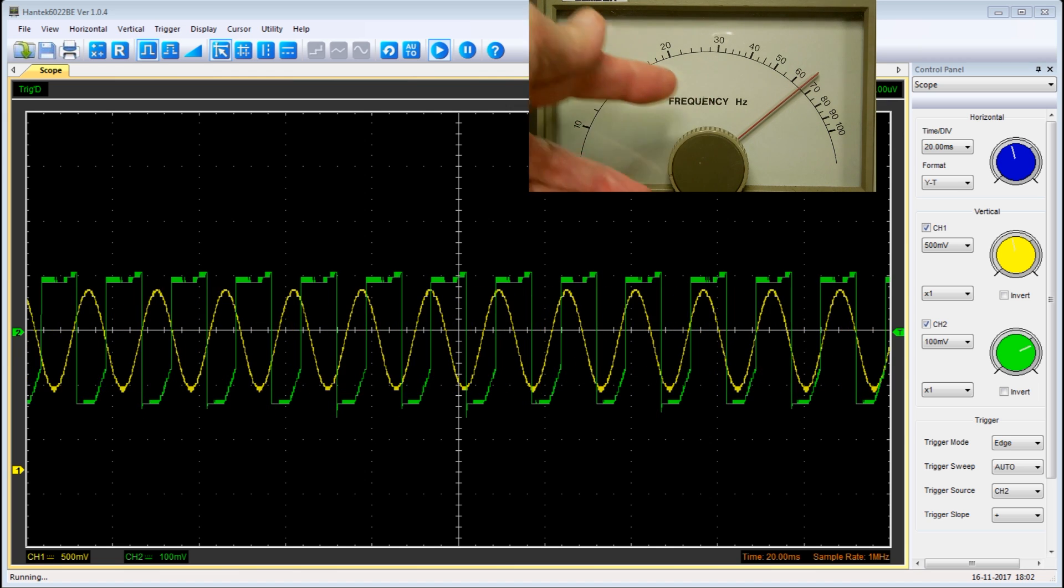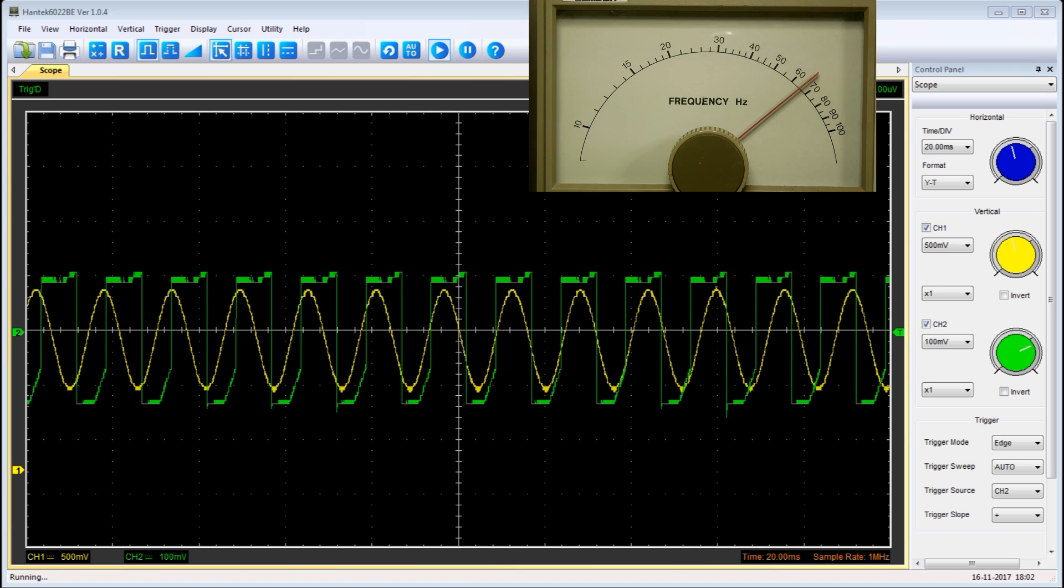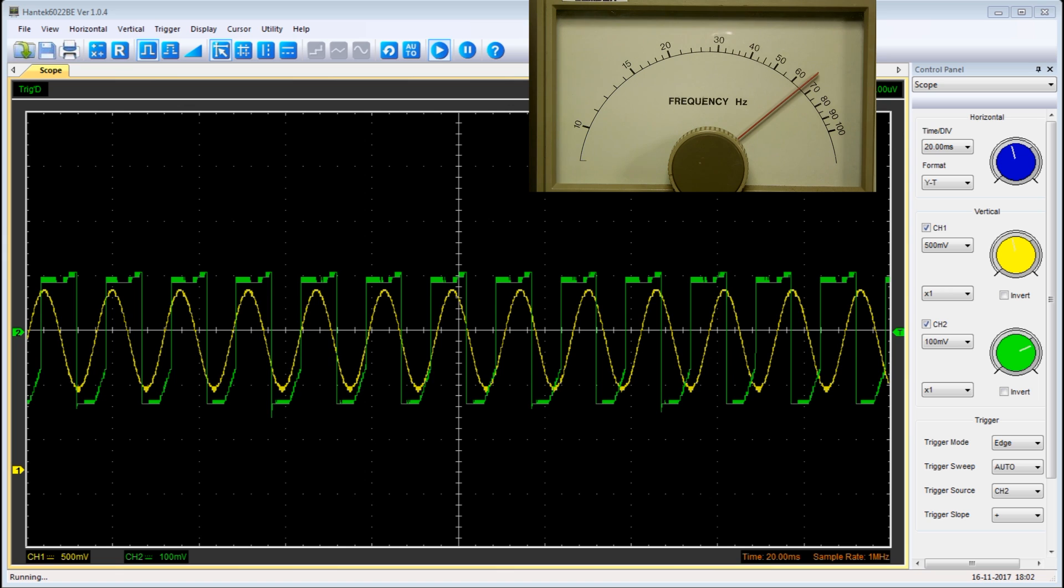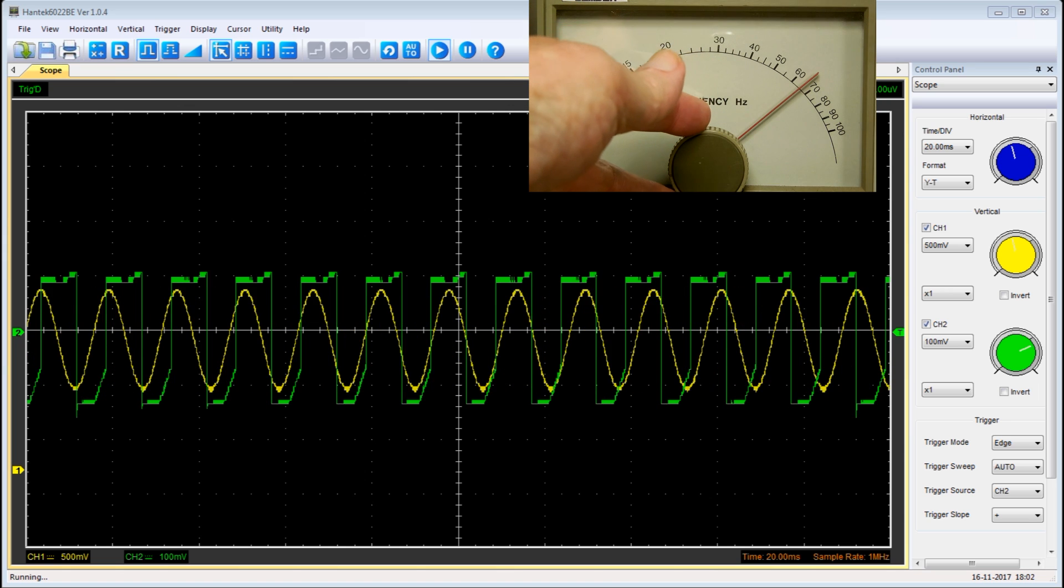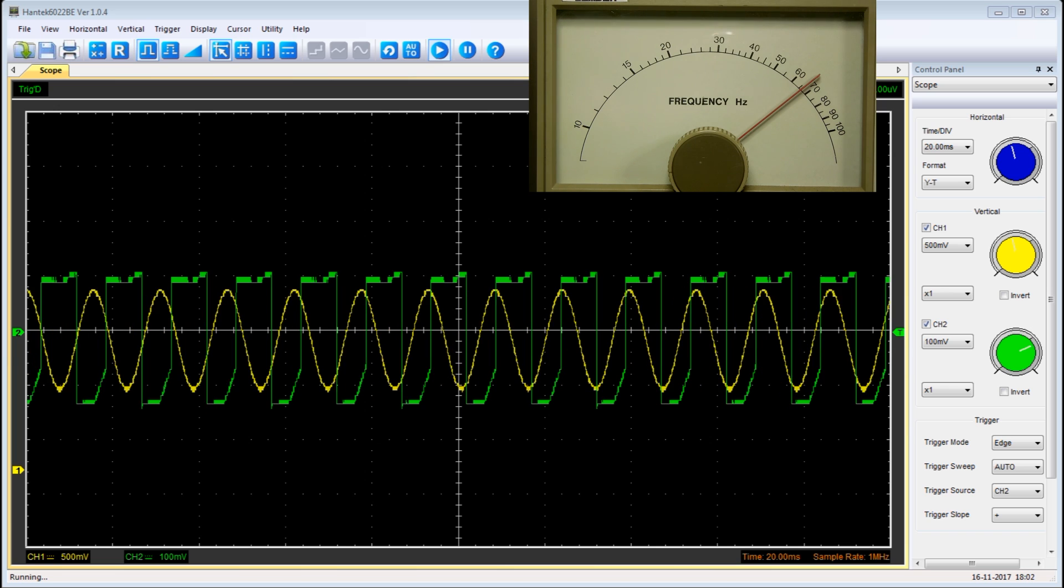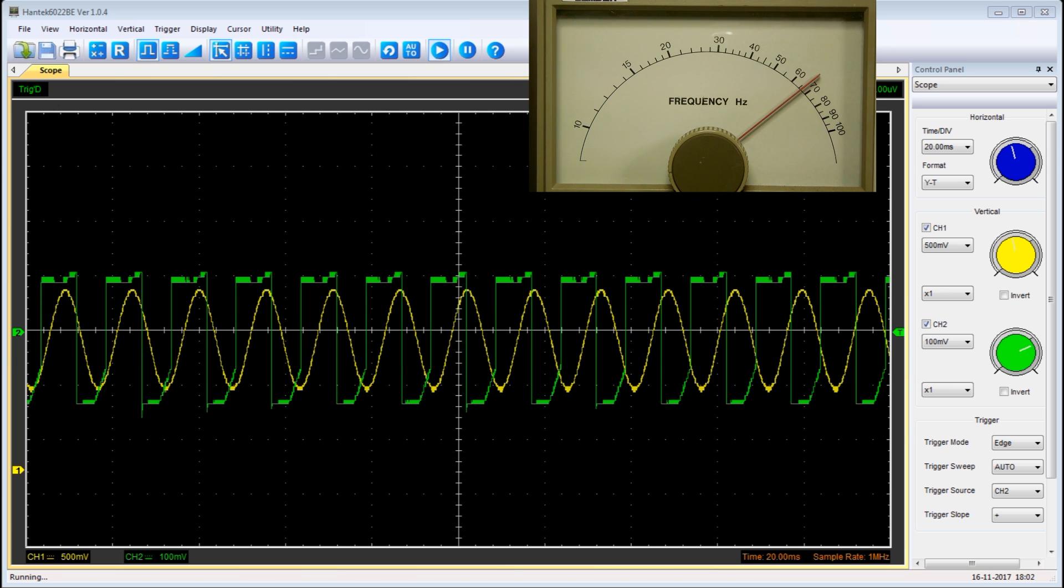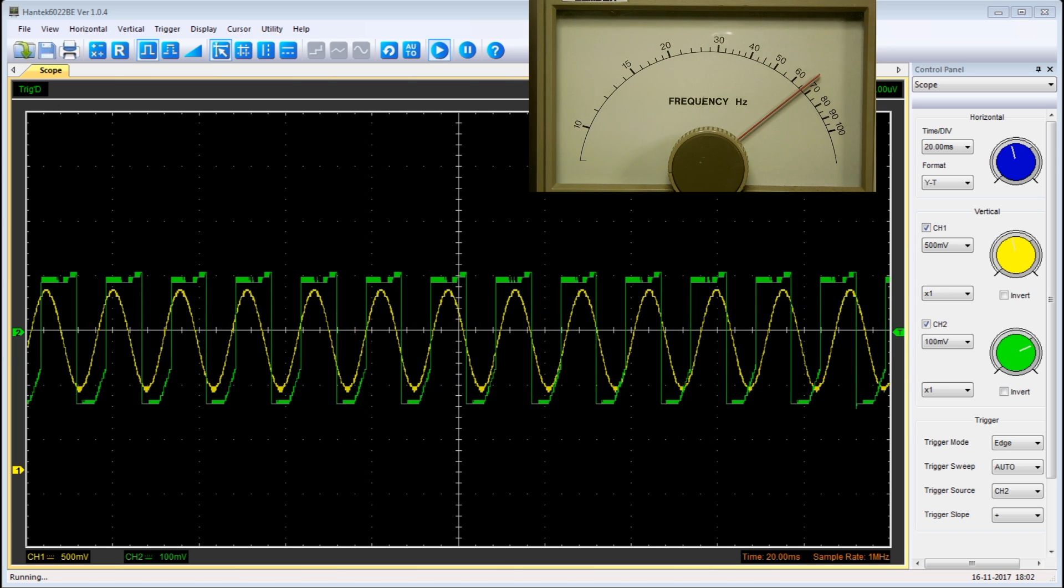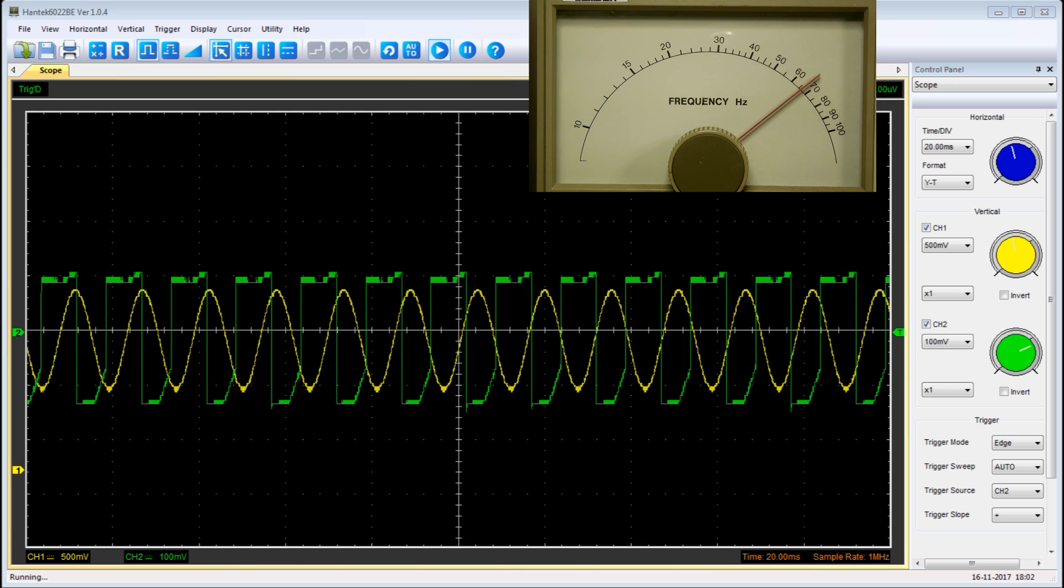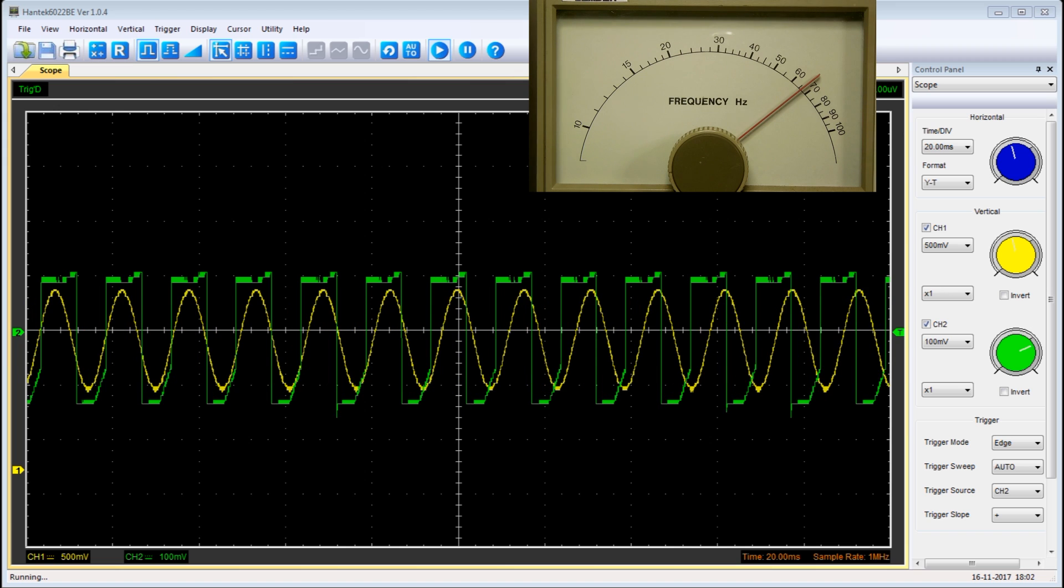I want about somewhere in the neighborhood of 60 cycles. This is beginning to look pretty good right here. It's pretty close. So it looks like that multivibrator is running at about 67, somewhere in there, which is close enough.